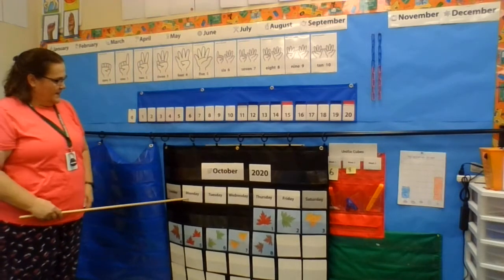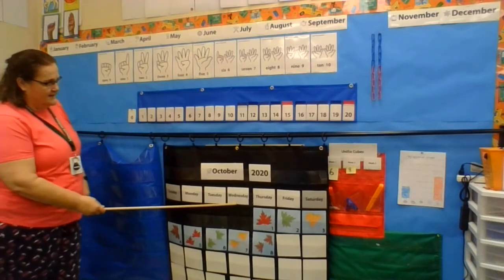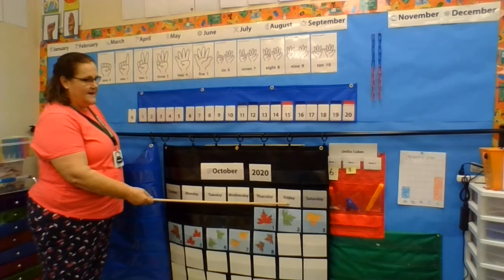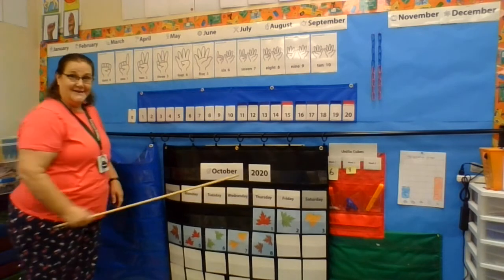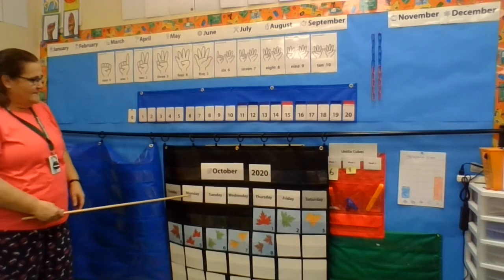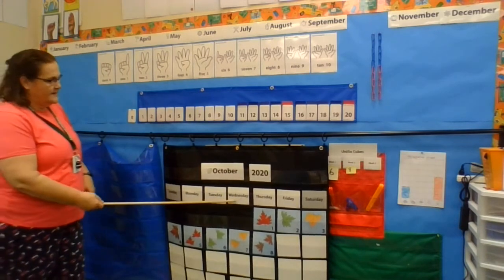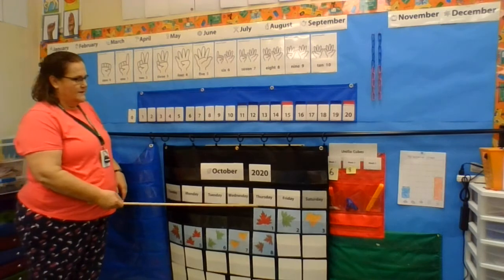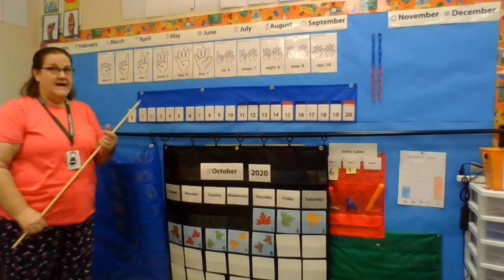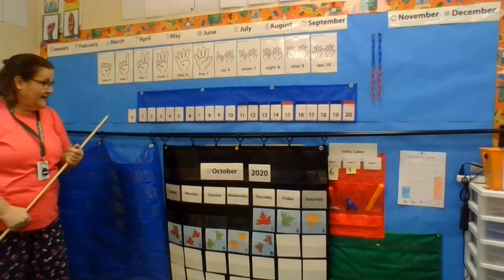Sunday, Monday, Tuesday, Wednesday, Thursday, Friday, Saturday. That's our new way: Sunday, Monday, Tuesday, Wednesday, Thursday, Friday, Saturday. Those are the days of the week.